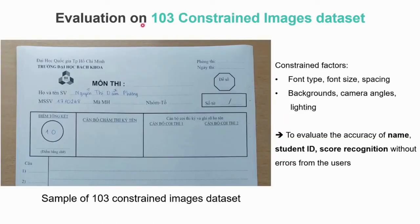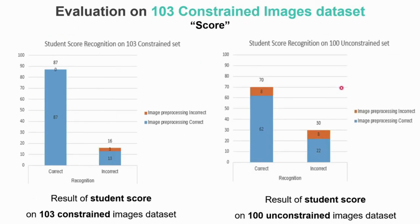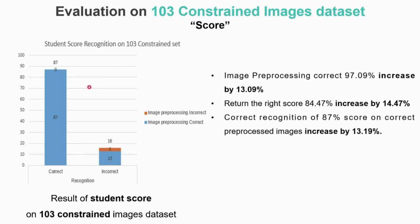Evaluation on 103 constrained images — constrained regarding font type, font size, spacing, and with varying backgrounds, camera angles, and lighting. In this set, words and numbers are clean and numbers are not allowed outside the circle. The results for name, student ID, and score recognition on 103 constrained images are better than the unconstrained set, with the score recognition being very good.